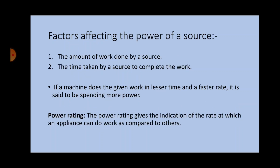Factors affecting the power of a source: there are two factors. First, the amount of work done by a source. Second, the time taken by a source to complete the work. Note: if a machine does the given work in lesser time at a faster rate, it is said to be spending more power. The power rating gives the indication of the rate at which an appliance can do work as compared to others.